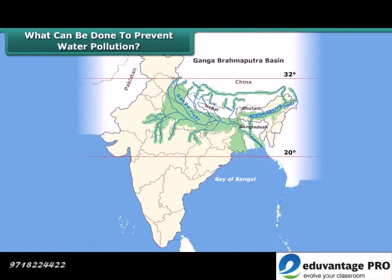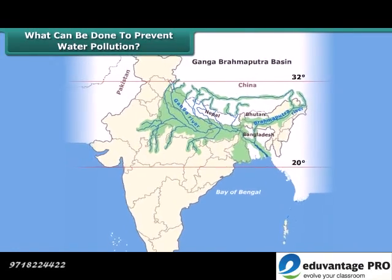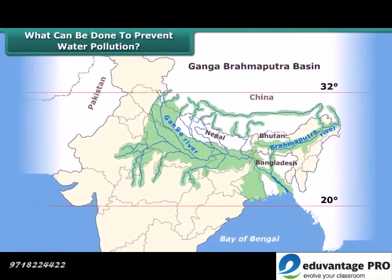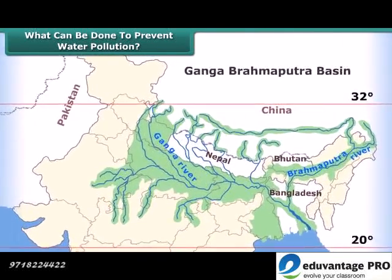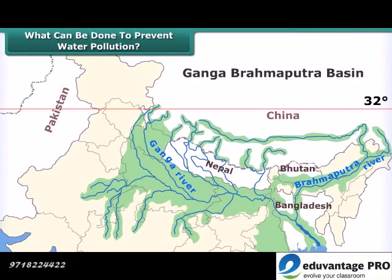The government also took measures to prevent water pollution in rivers. For example, the Ganga Action Plan was launched in 1985, and it aimed to reduce the pollution levels in the river.